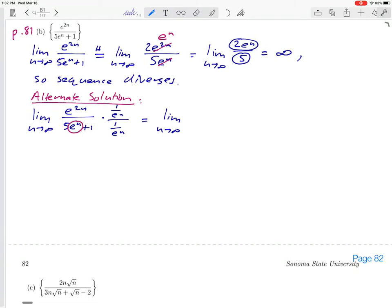For example, if we take the numerator e to the 2n and multiply it by 1 over e to the n, we are going to get e to the 2n over e to the n. That's our new numerator. And then in the denominator, that 1 over e to the n is going to actually have to distribute through to both of the terms in the bottom. So 5e to the n is going to get divided by e to the n, and so is 1, the second term.